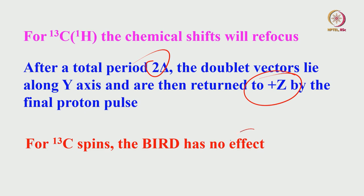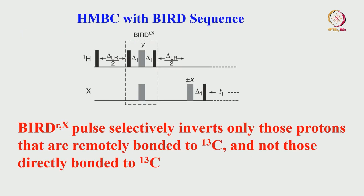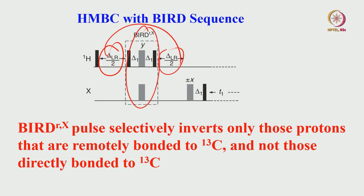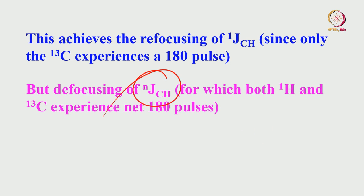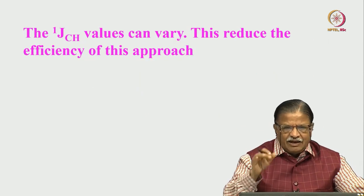So for carbon-13 spins, the BIRD sequence has no effect — that is what you should remember. In the HMBC sequence with BIRD, everything remains the same: we have delta LR, delta LR, delta LR, and in between these two delta LR periods a BIRD sequence is placed. The BIRD sequence selectively inverts only those protons remotely bonded to carbon-13 — 2 or 3 bonds away — and does not affect protons directly bonded to carbon-13. This results in selective refocusing of 1JCH while defocusing all long-range couplings, since the delay in the BIRD sequence is set for 1JCH.